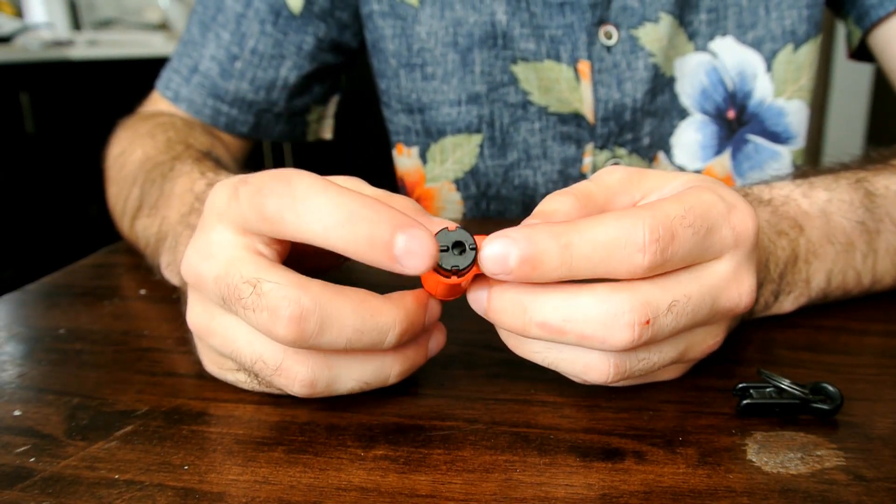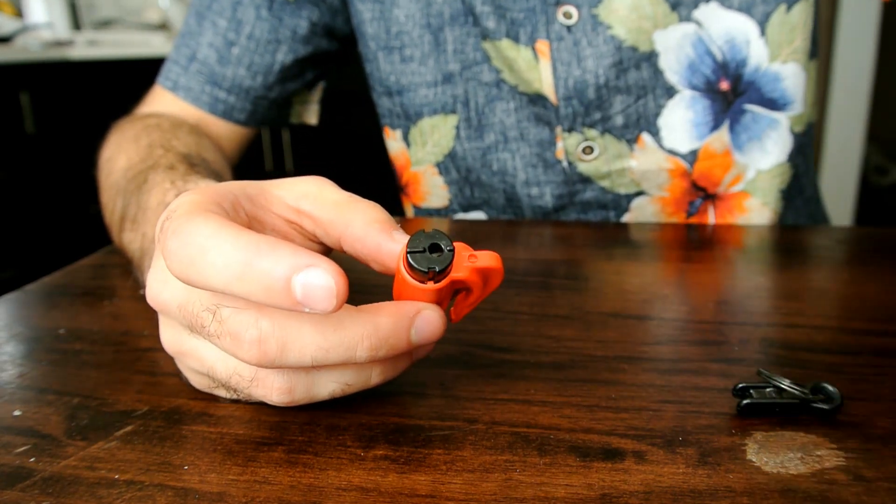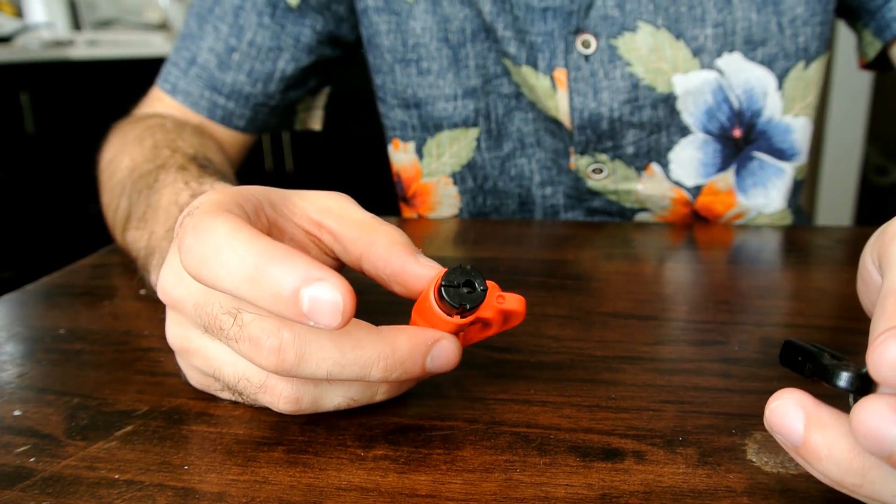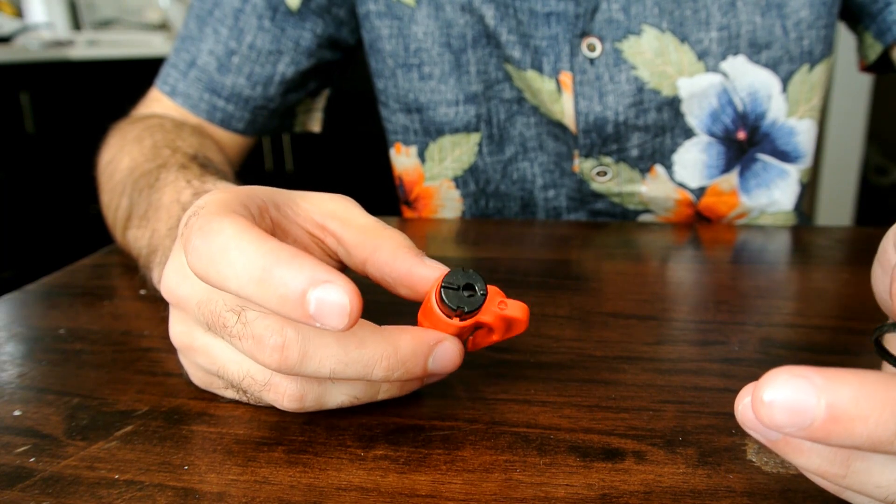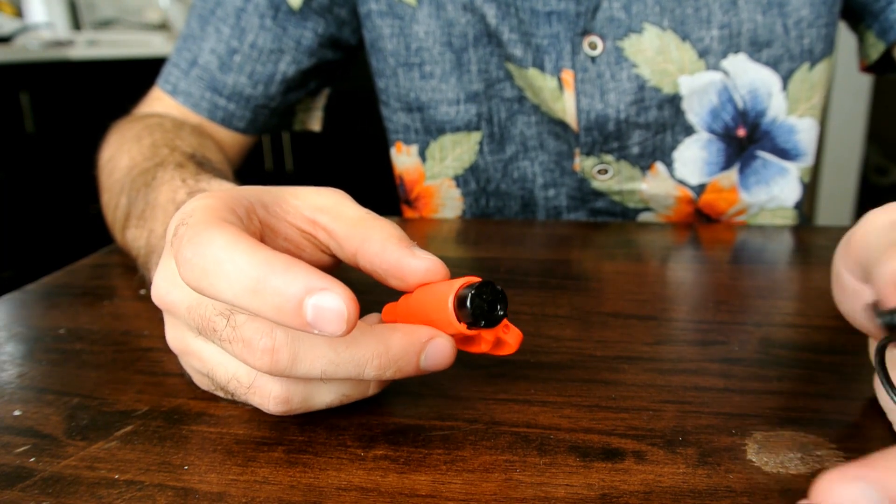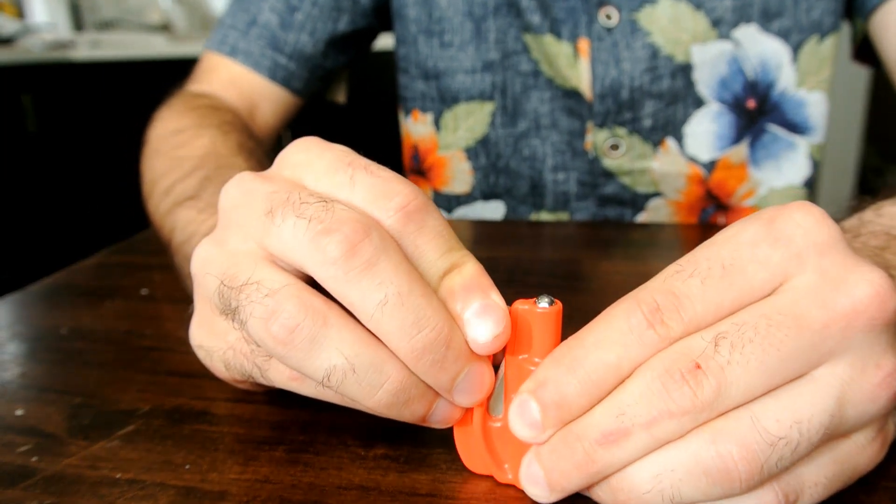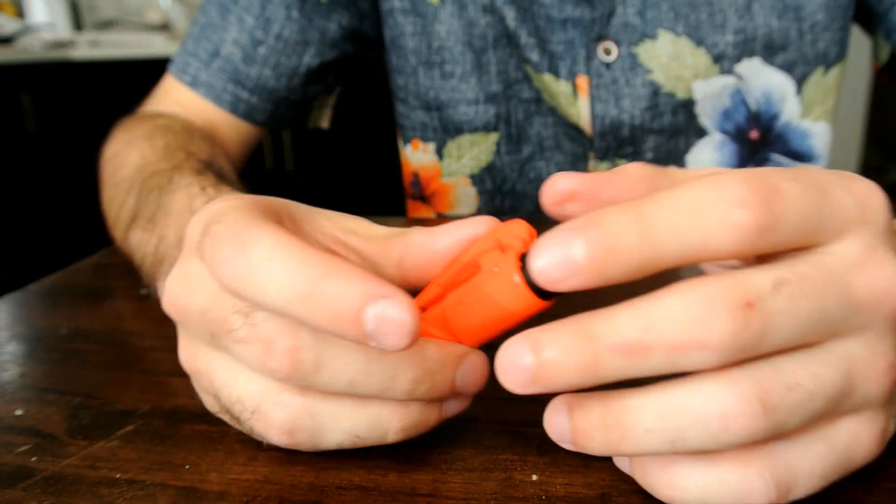So this end is the glass breaking end. Tried it on beer bottles and things like that. But I have seen other videos where it does work on car windows, so it's really reliable. Basically what you do is just press into it and you'll hear a noise like that and the glass will break.